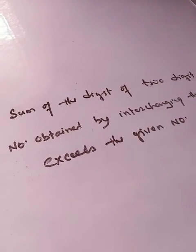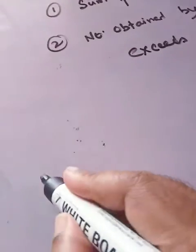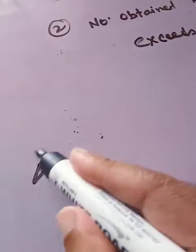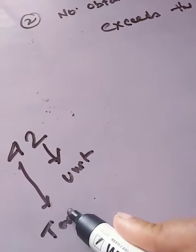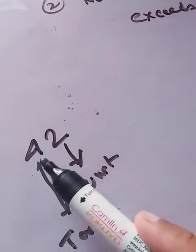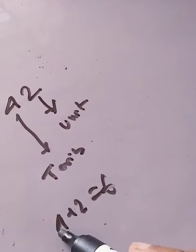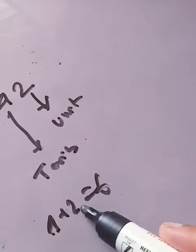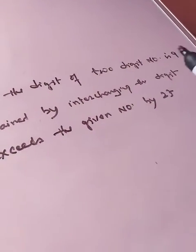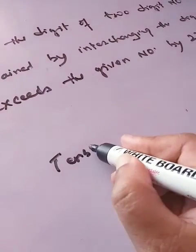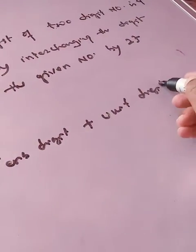According to the first sentence of the question, it is given that the sum of the digits of a two-digit number is 9. In a two-digit number, there are two types of digits: unit digit and tens digit. So the sum of the tens digit and unit digit equals 9.